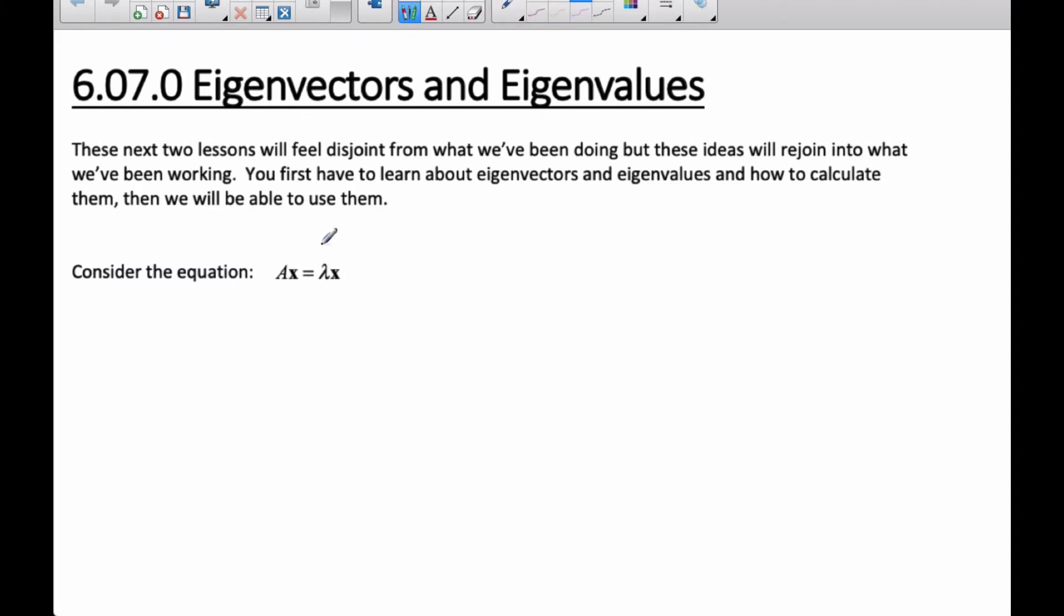I know that this value, lambda here, is called the eigenvalue. And there's usually, for a 2×2, there's going to be two of them. And this x here, the x, is going to be the eigenvectors, because they're pretty special, it's a unique situation where this happens for.